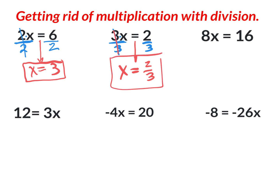Moving on: we have eight times x equals sixteen. How do I get rid of the multiplication of eight? I'm going to do the inverse of multiplying, which is division by eight. What you do to one side you do to the other — divide by eight. This cancels out. Can I divide sixteen by eight? Yes, that is two. So the answer is x equals two.